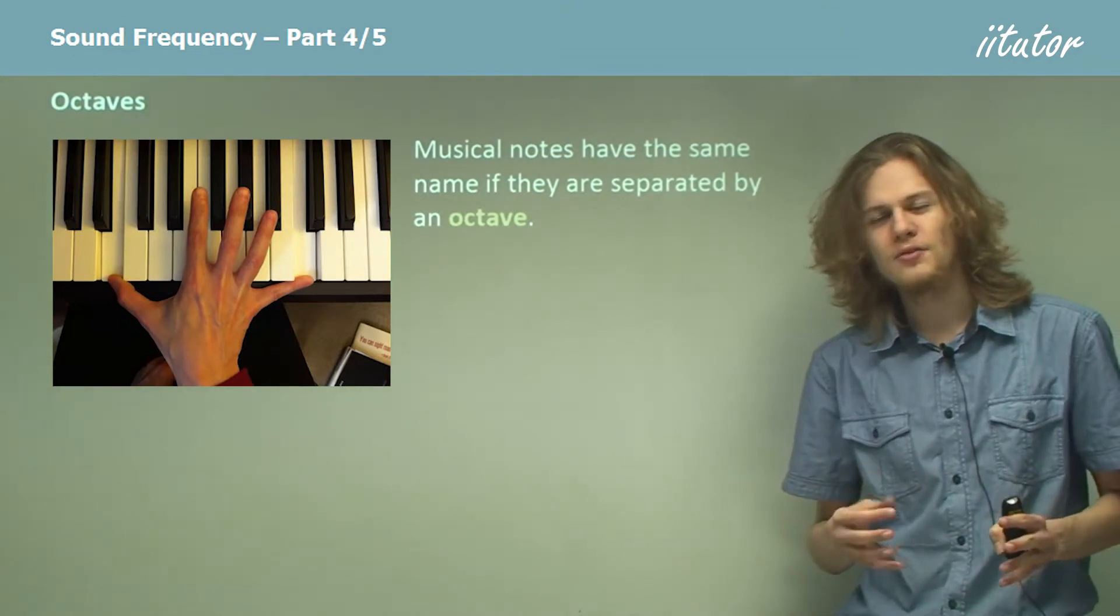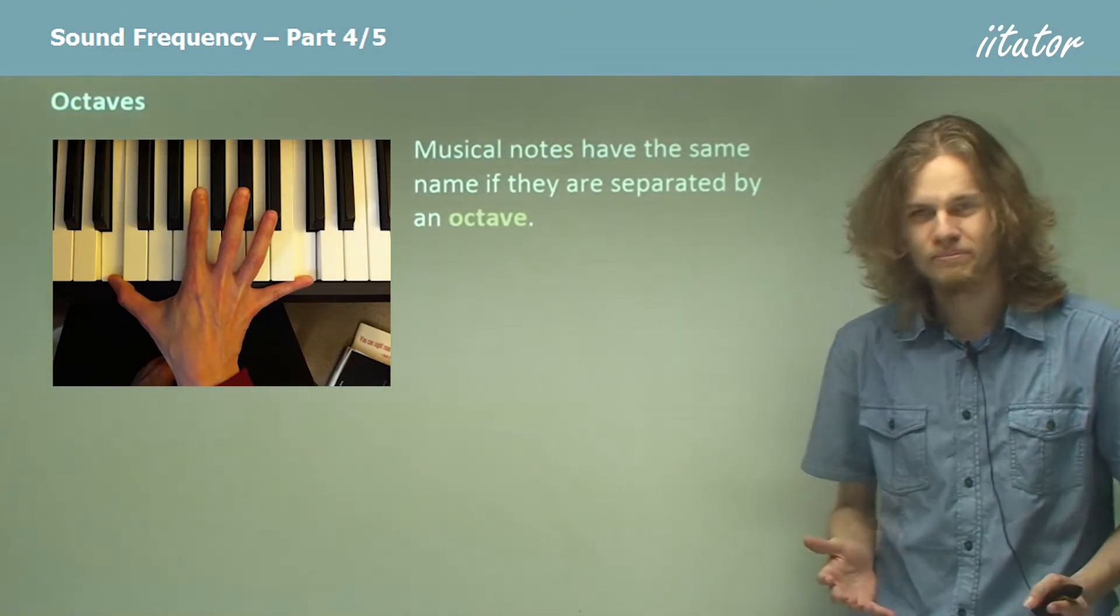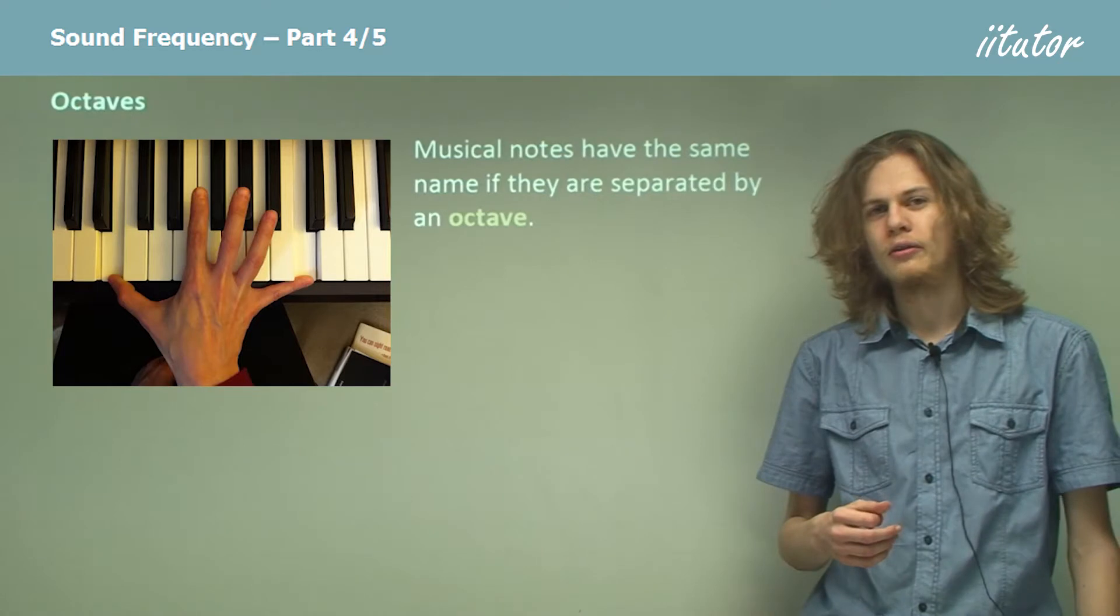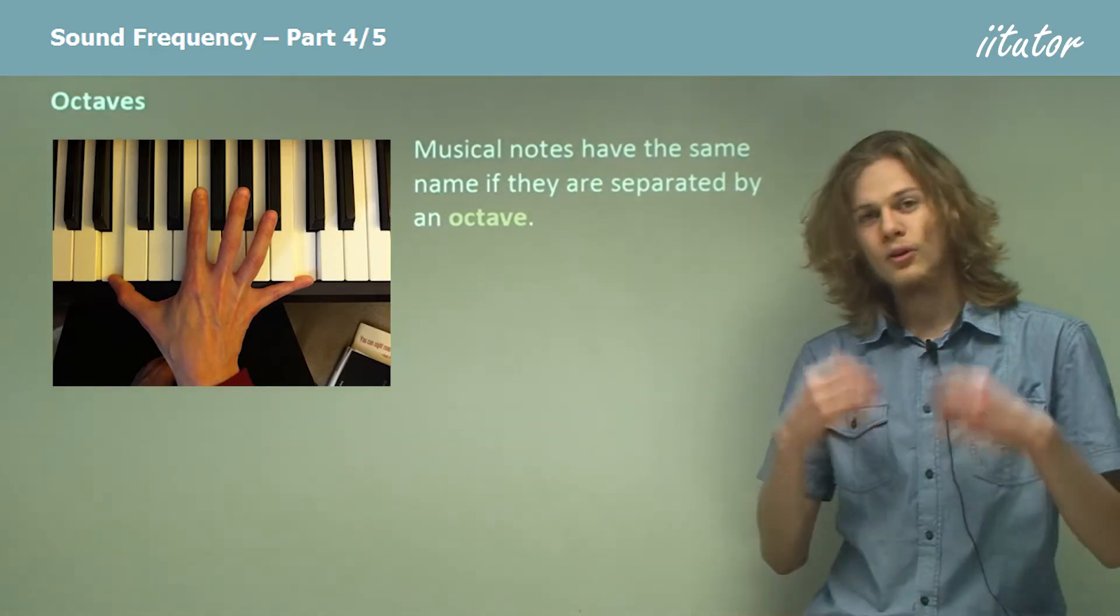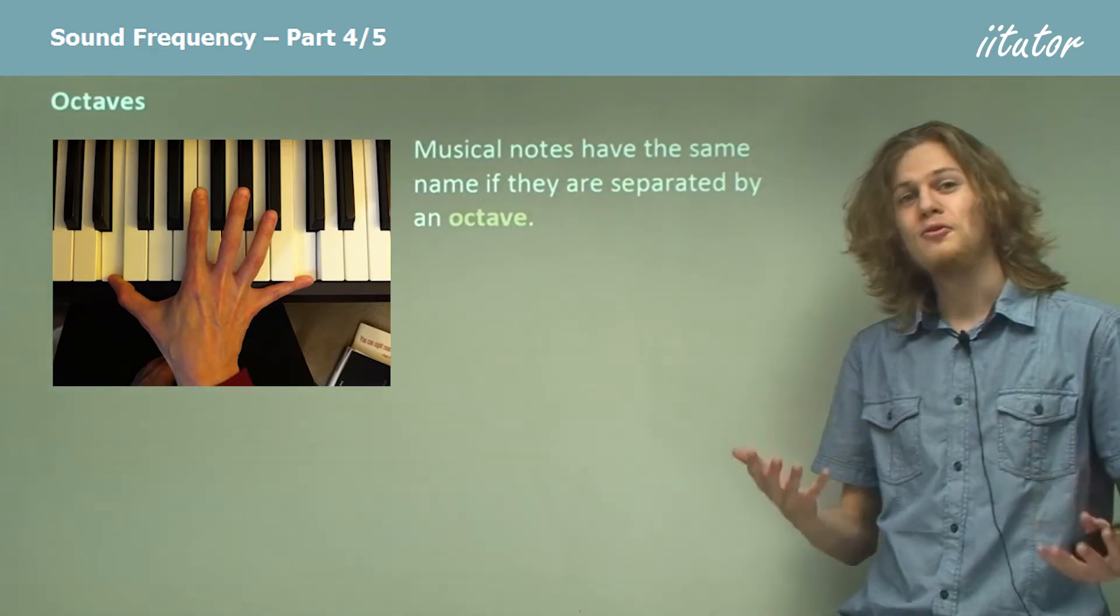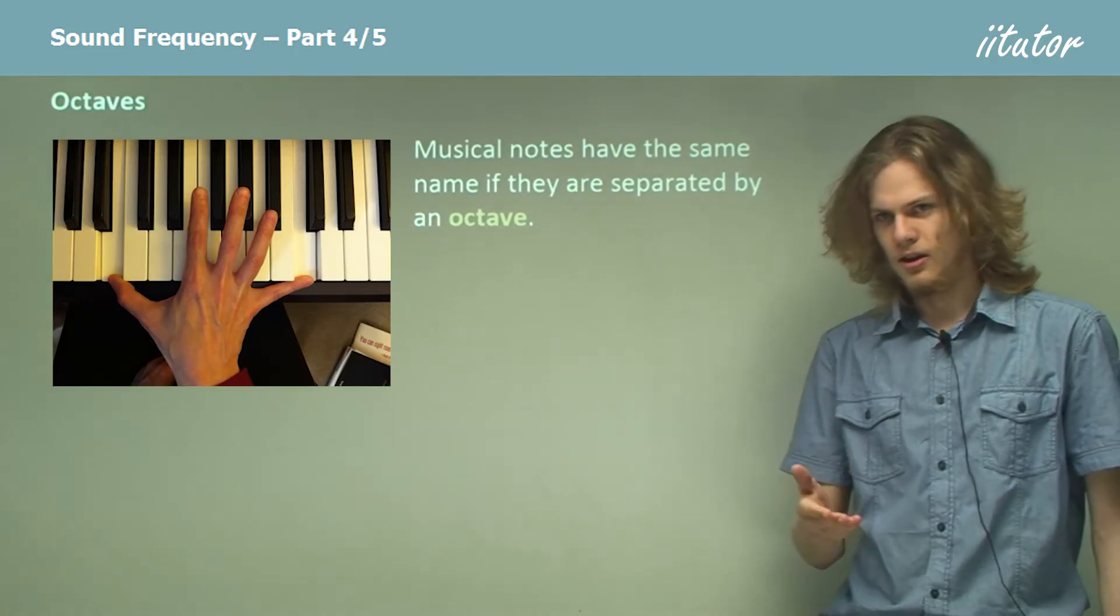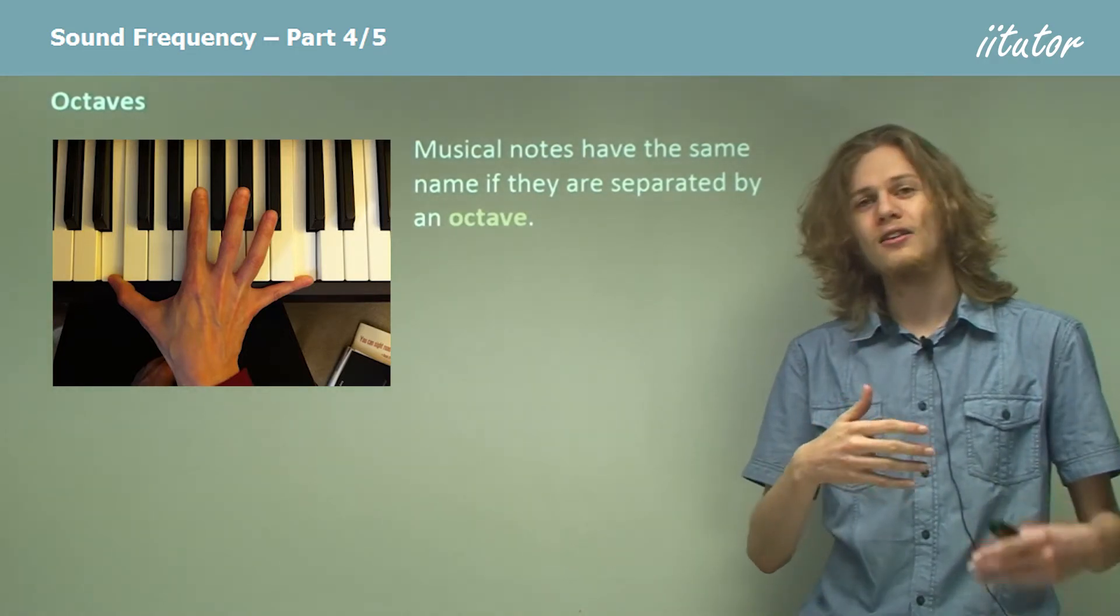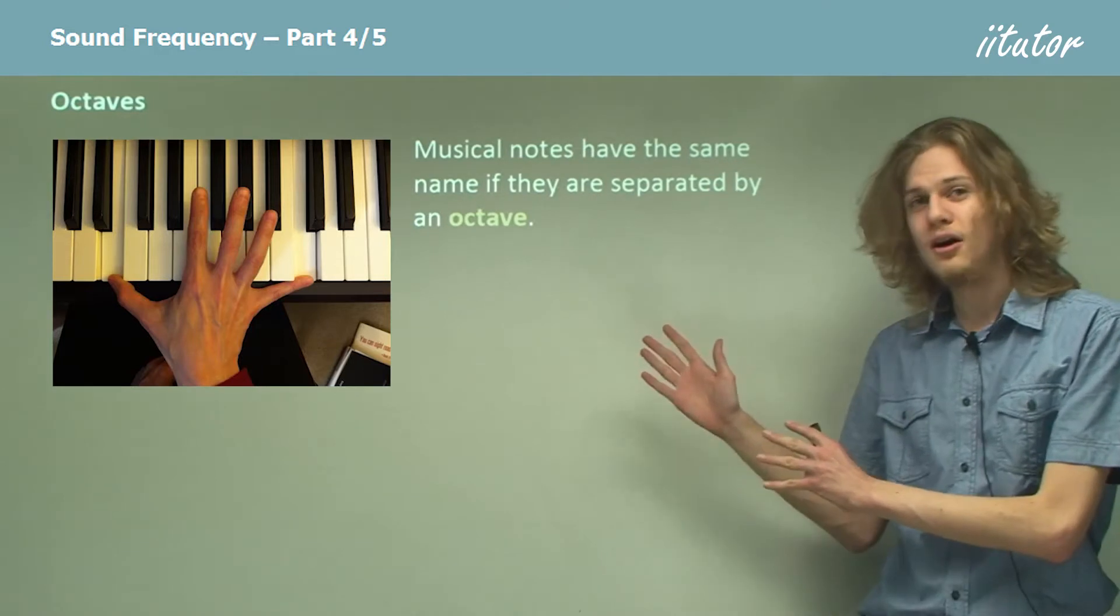Musical notes can have the same name if they are separated by an octave. So an octave is an interval going from here to here. If we're musicians then we'll know that la and la are the same note. They're one octave apart.